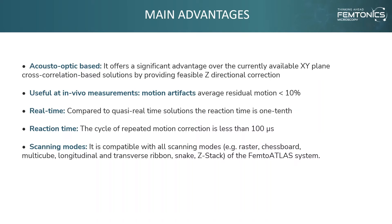As a summary, let's see the main advantages of Femtonics Focus Spinner. It is acousto-optic-based, so by leveraging the capabilities of 3D random access line scanning, our system enables seamless motion correction along each axis. It offers a significant advantage over currently available XY-plane cross-correlation-based solutions by providing feasible Z-directional correction. It is useful for in vivo measurements — motion artifacts caused by respiratory movement or heartbeat can be efficiently eliminated, with an average residual motion under 10% of the original motion. It is real-time: during the measurement, the focal point is online-relocated based on the estimated motion of the reference point. Compared to quasi-real-time solutions, the reaction time is one-tenth. The cycle of repeated motion correction is less than 100 microseconds, meaning the largest residual motion amplitude is the one collected during this short time window.